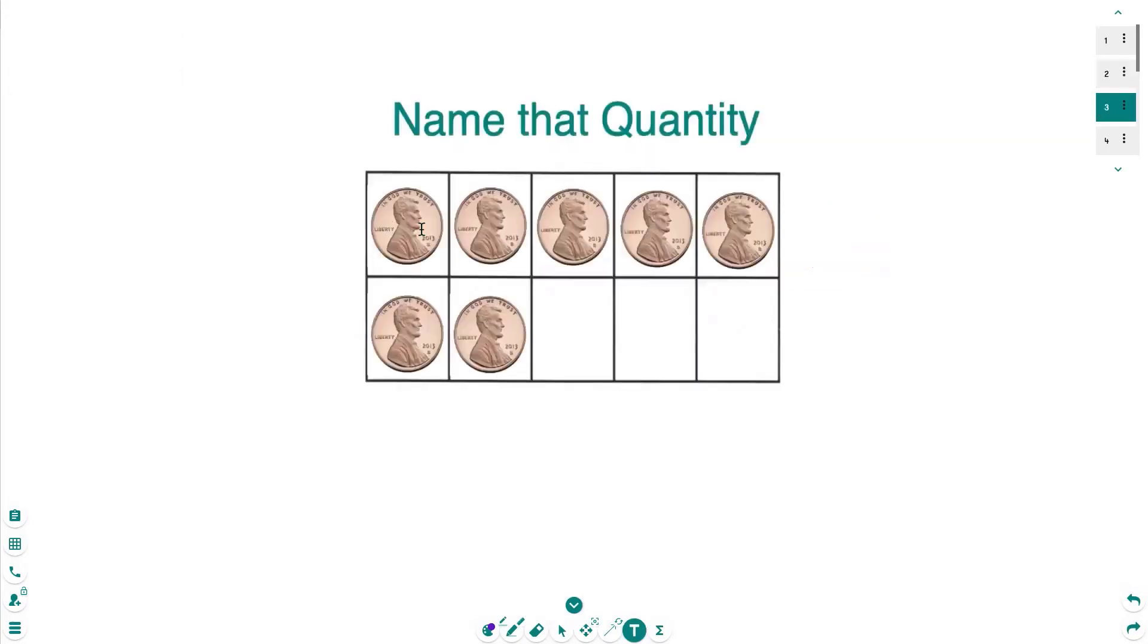And now I have one full row of five pennies plus two more pennies. So I have five, six, seven total cents.